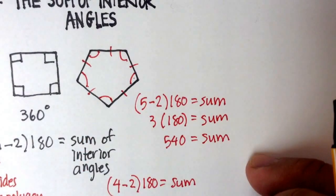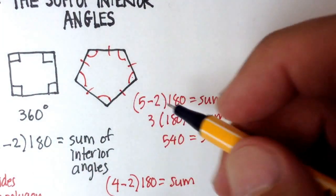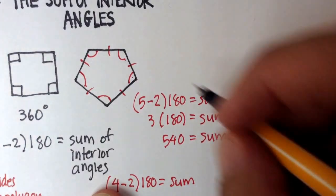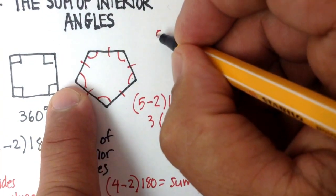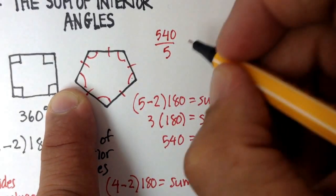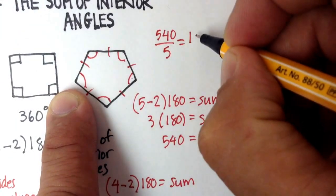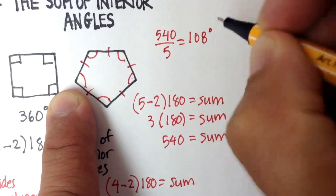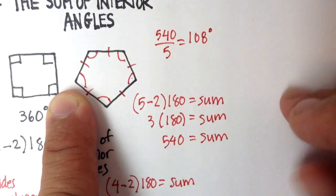So remember, that's only if it's in a regular pentagon, or regular polygon. So let's see if we can figure that out. So we would say 540 divided by the number of sides, and that will give us 108 degrees per angle.